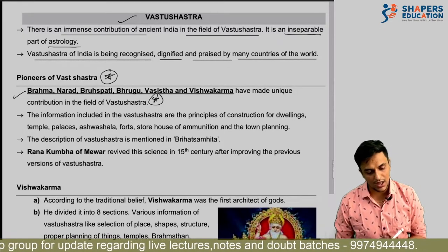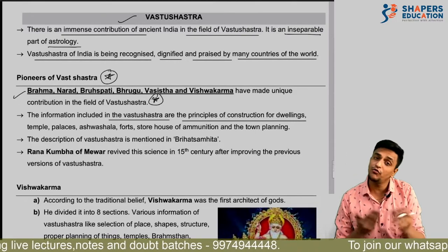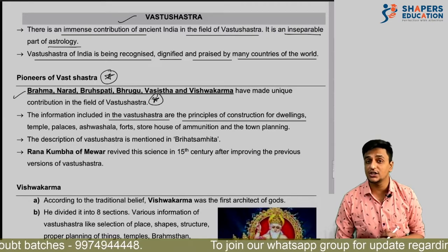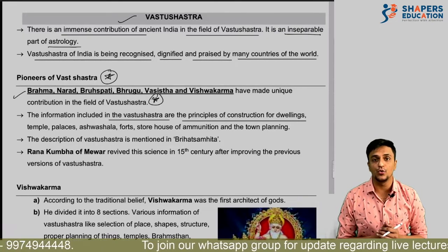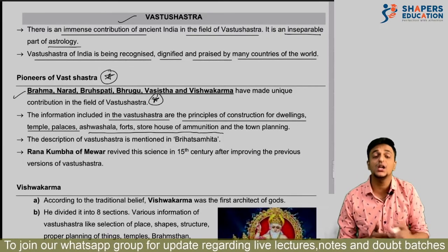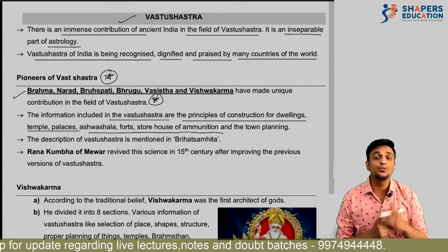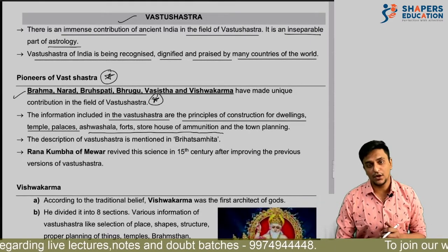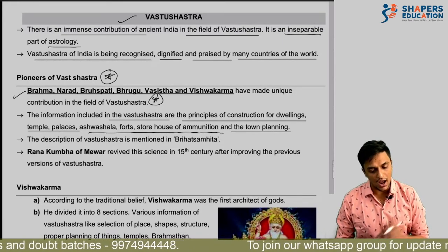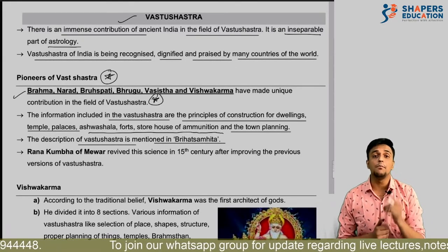Vastu Shastra covers the construction of dwellings — how construction should be done, in which direction, where temples should be located, palaces, and where the weapons store room of a king should be placed. It also covers how time planning should be done. The description of Vastu Shastra is given in the Brihat Samhita — important for objective questions. Rana Kumbhawaju from Mewar revised and revived Vastu Shastra in the 15th century, bringing changes to it.